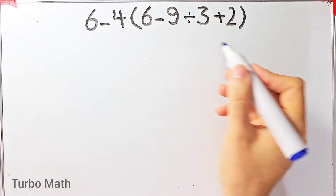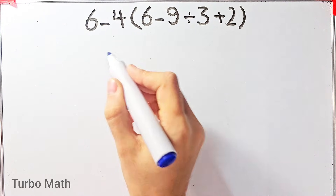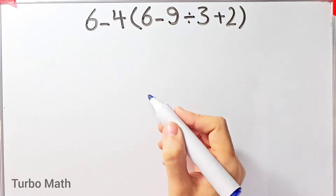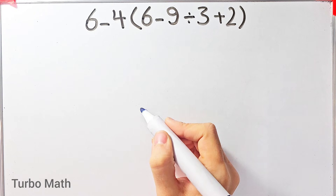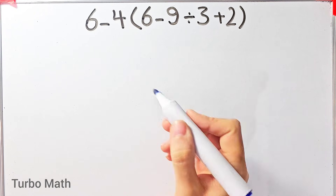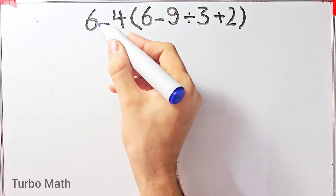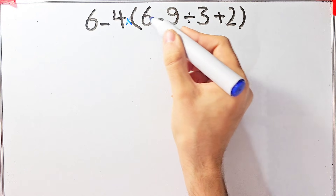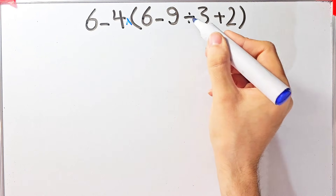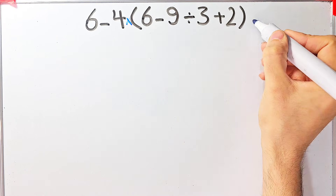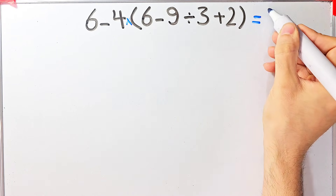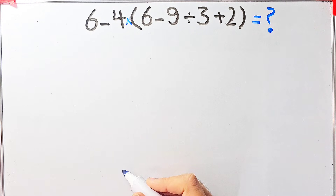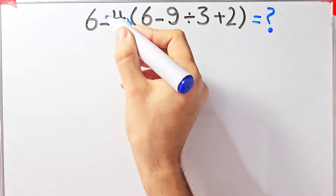Hi friends, welcome to Turbo Math channel. Many people when they see this question don't know which operation to do first, so they might get it wrong. The question is: six minus four, then times, open parentheses, six minus nine divided by three plus two, close parentheses. What is the answer?